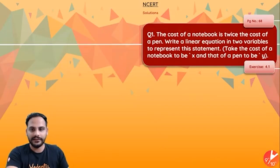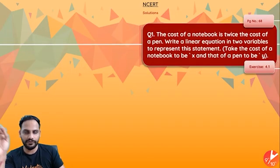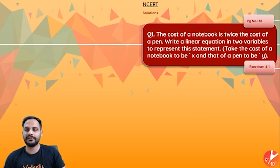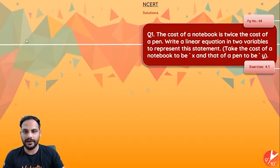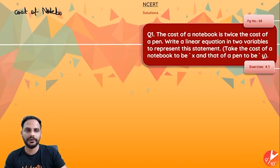The first question says: the cost of a notebook is twice the cost of a pen. Write a linear equation in two variables to represent this statement. Take the cost of a notebook to be x and the cost of a pen to be y. So the question has told us to take the cost of one notebook as rupees x.